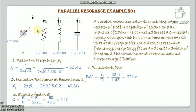This is the parallel RLC circuit with R = 60 Ω, L = 200 mH, C = 120 μF, and supply voltage = 100 V. Resonant frequency fr = 1/(2π√LC) = 1/(2π√(0.2 × 120×10⁻⁶)) = 32.5 Hz. Inductive reactance at resonance: XL = 2πfL = 40.8 Ω. Quality factor Q = R/XL = R/(2πfL) = 60/40.8 = 1.47. Bandwidth = fr/Q = 32.5/1.47 = 22 Hz.